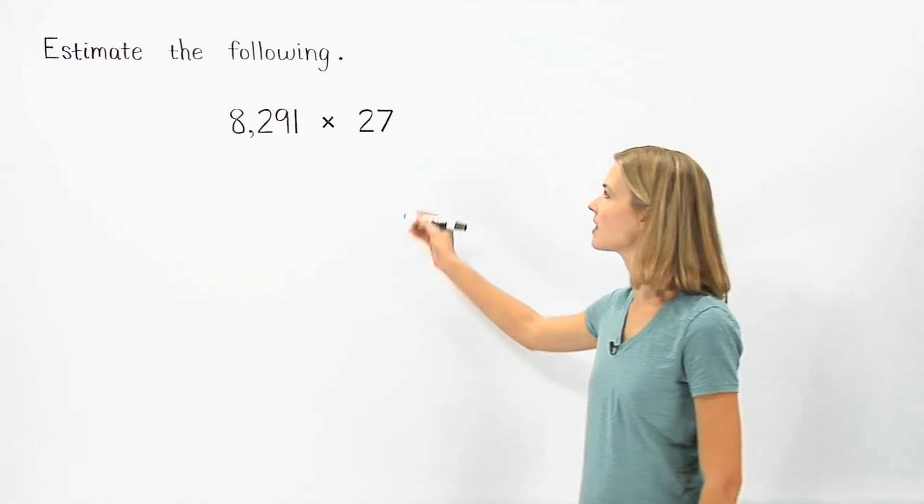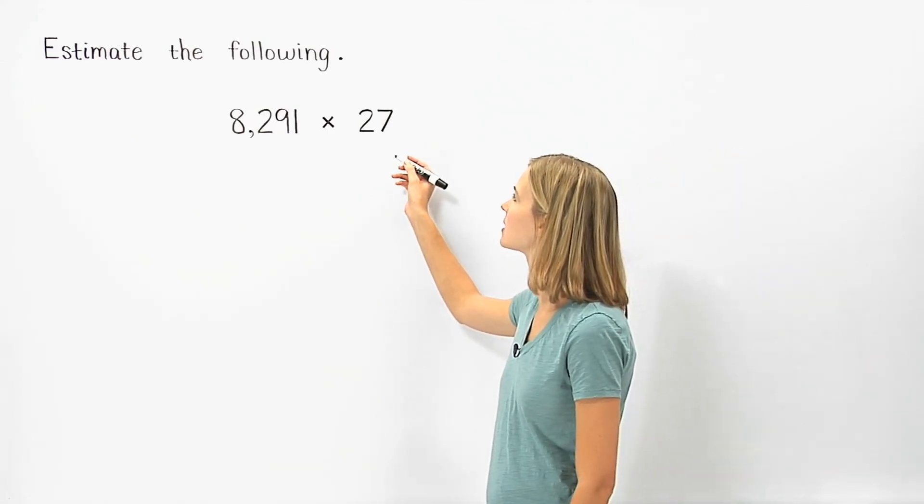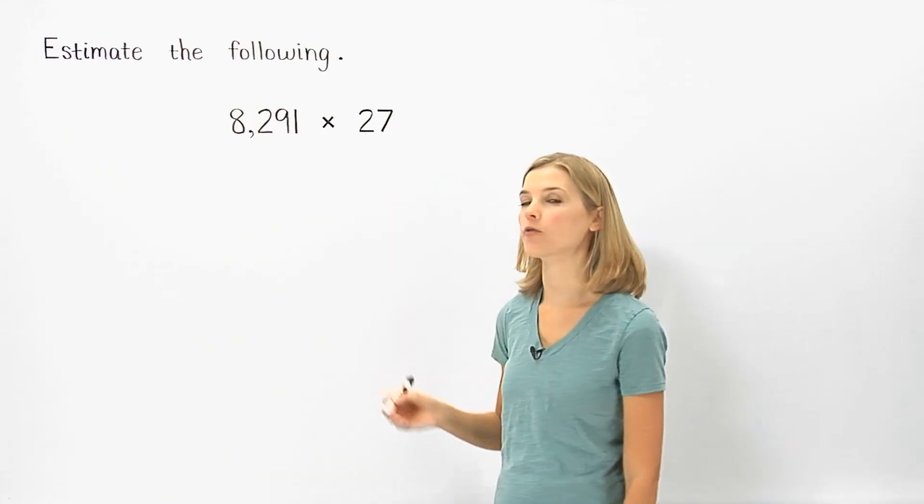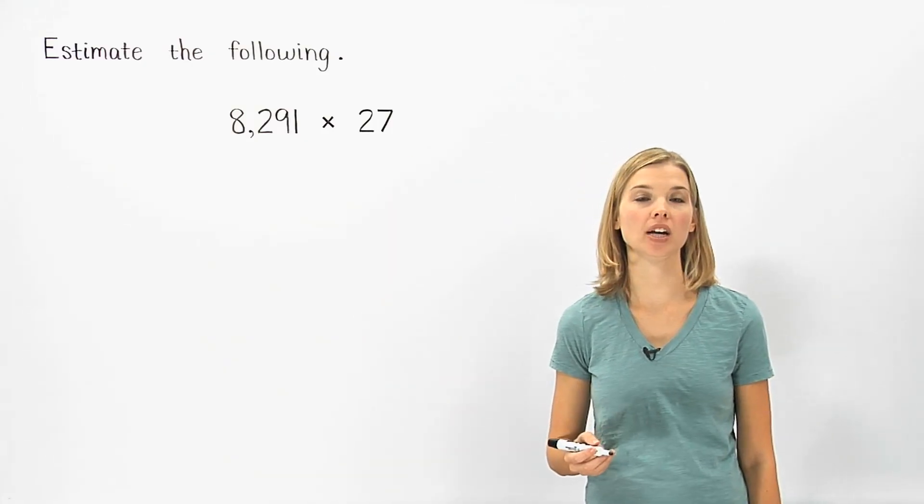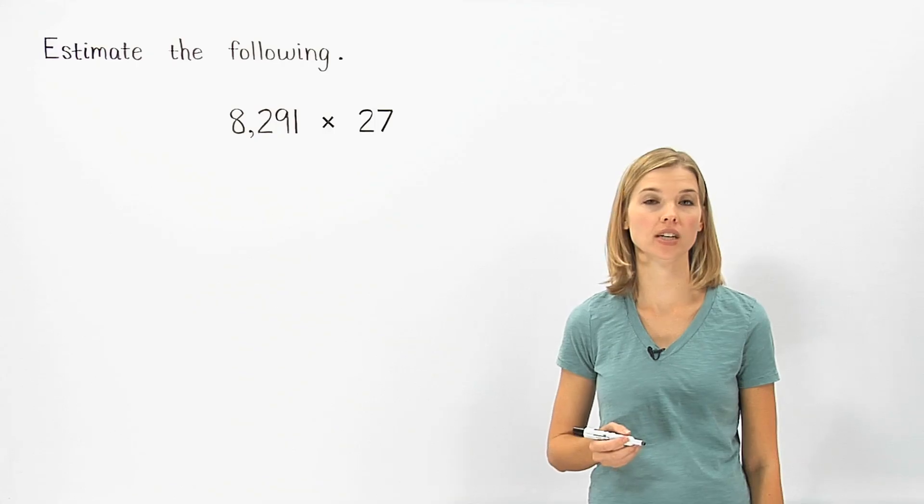To estimate the product of 8,291 times 27, we first round so that each number contains only one non-zero digit.